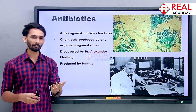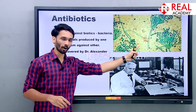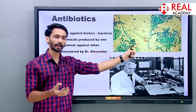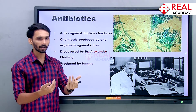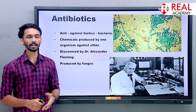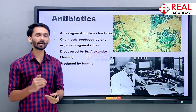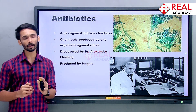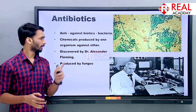For example, fungus is the organism which makes these chemicals against another organism, which is bacteria. So for killing bacteria, fungus makes some chemicals which are antibiotics.